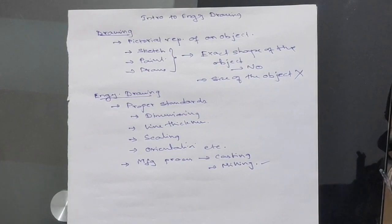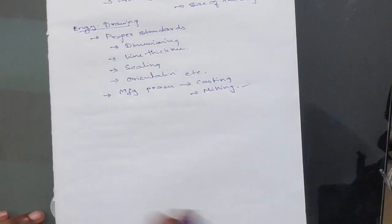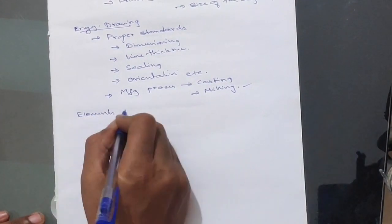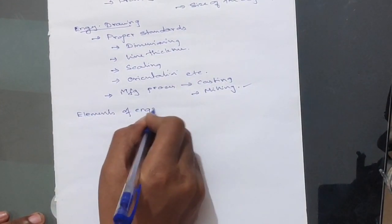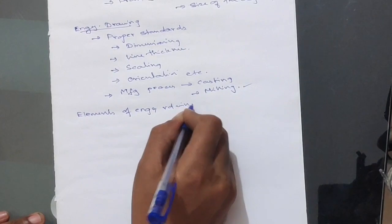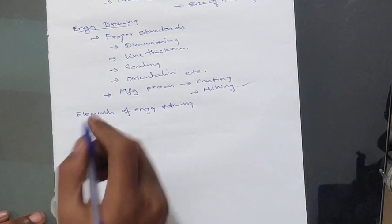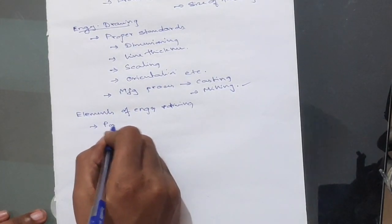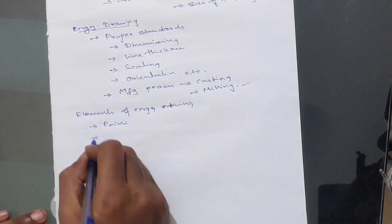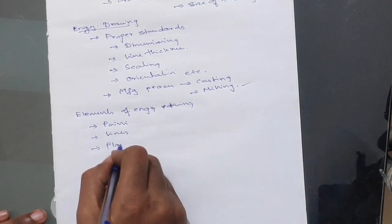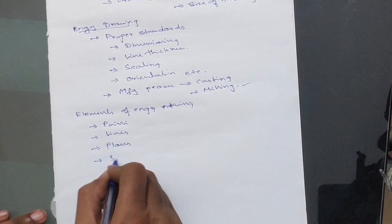Now, once we have understood what is Engineering Drawing, we will see what are the elements of Engineering Drawing. In elements of Engineering Drawing, same like the elements of geometry, we come across points, we come across lines, we come across planes and we come across solids.